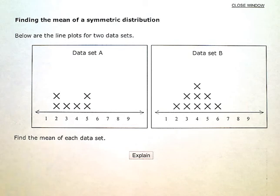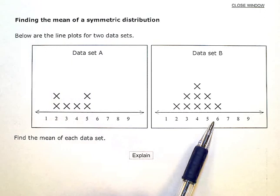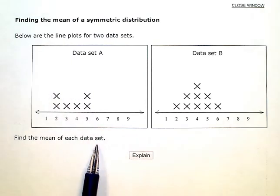Finding the mean of a symmetric distribution. Below are the line plots for two data sets. So I have data set A, data set B. Find the mean of each data set.